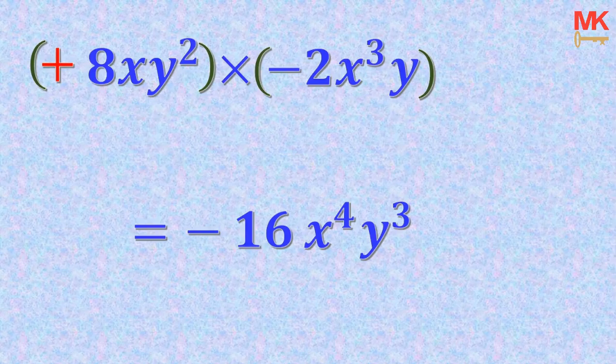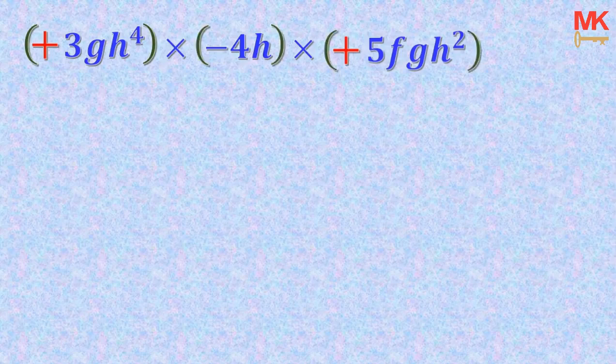Let's take the last example: 3GH to the 4th power multiplying negative 4H multiplying 5FGH squared. The first term doesn't have an operation, so we give it a positive operation. The second term has its negative operation. The third term doesn't have an operation, so we give it a positive operation. We group all three terms and follow the rules. The positive operation multiplies the negative, giving negative; the negative multiplies positive, giving negative again — so plus times minus times plus is minus. Then 3 multiplies 4 gives 12, and 12 multiplies 5 gives 60.